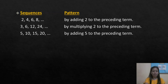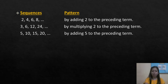Here are more examples. The sequence 2, 4, 6, 8 has a pattern of adding 2 to the preceding term. The sequence 3, 6, 12, 24 has a pattern of multiplying 2 to the preceding term. And the sequence 5, 10, 15, 20 has a pattern of adding 5 to the preceding term.